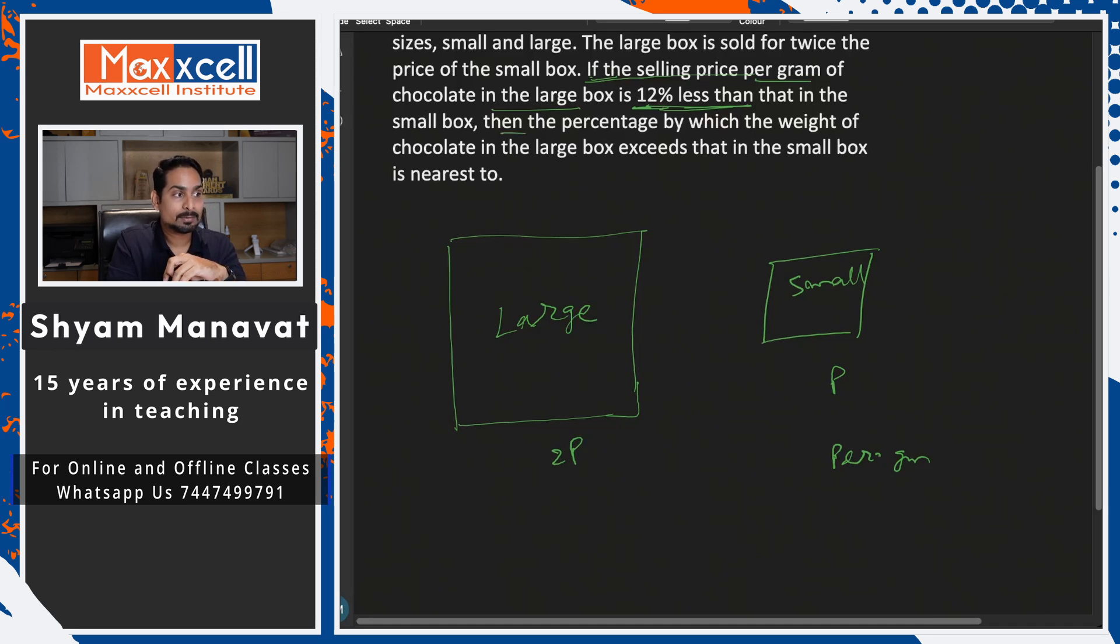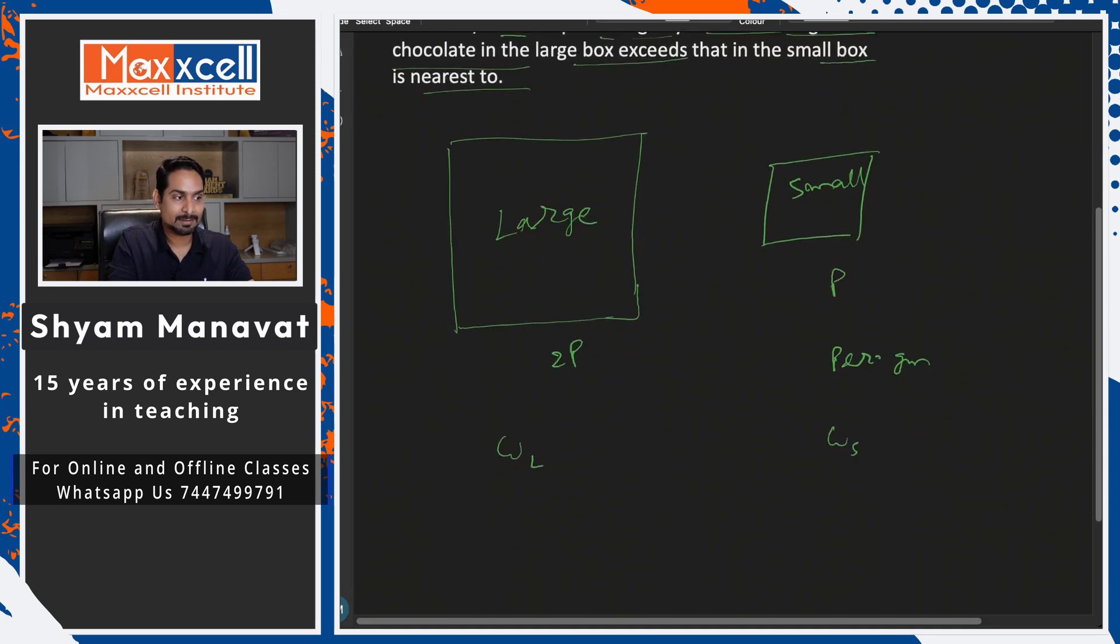The percentage by which the weight of the chocolate in the large box exceeds that is the smaller box. That means we need to once we need to find out the weight, weight of the large one, weight of the small one. We need to find this weight of large one is how much percentage more. Is the question clear to you?